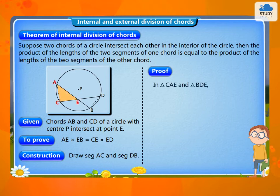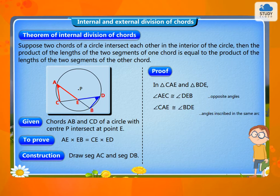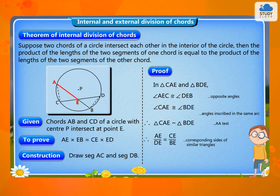Proof: In triangle CAE and triangle BDE, angle AEC is congruent to angle DEB, and angle CAE is congruent to angle BDE. Therefore, triangle CAE is similar to triangle BDE. Therefore, AE/DE = CE/BE, and therefore AE × EB = CE × ED.